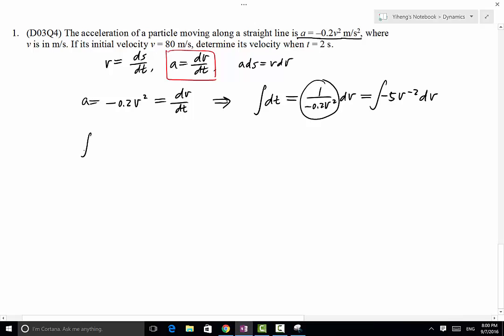On the left-hand side, the initial time is t equals 0 seconds, integrated to current time, dt. This is simply equals to t minus 0, which is just t.